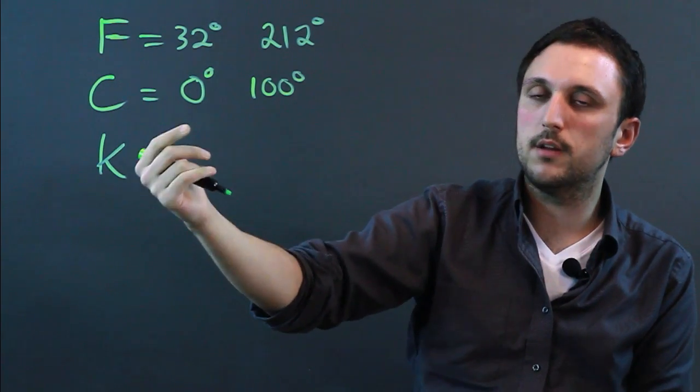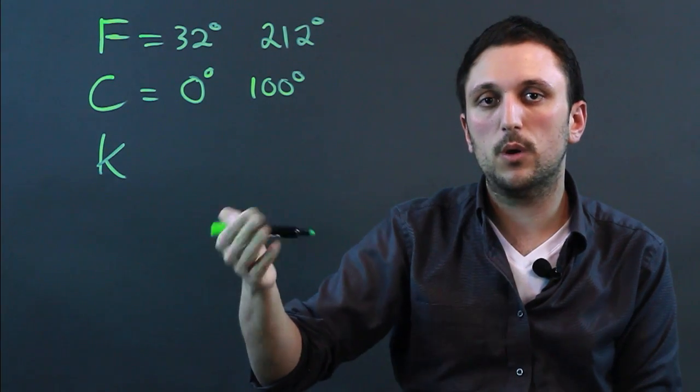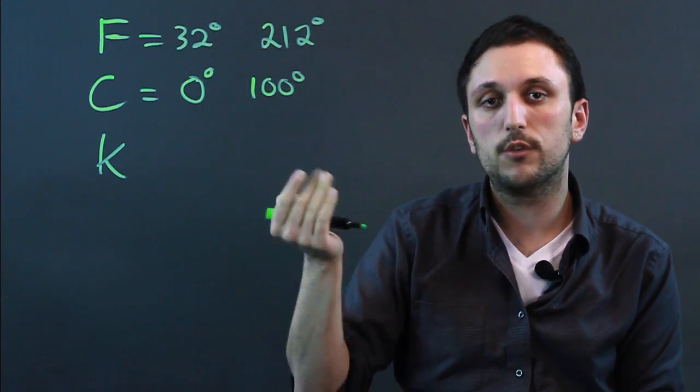But you still have negative numbers, and absolute zero is negative 273, which is very hard to remember.